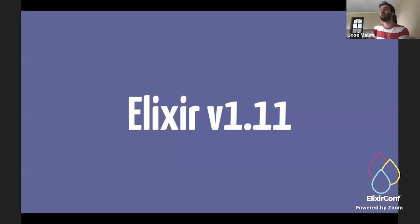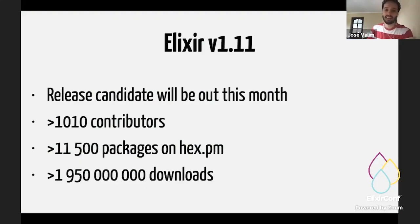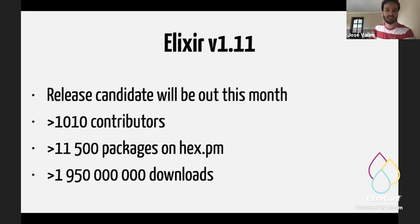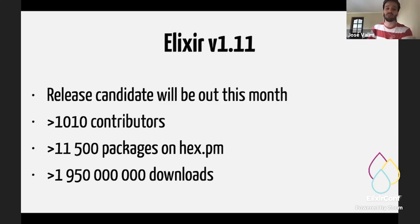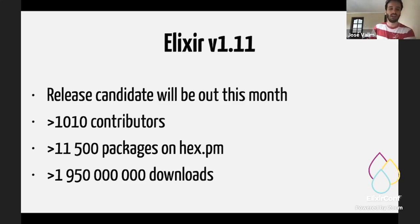The next Elixir version is going to be Elixir 1.11, and we are hoping the release candidate is going to be out this month. We'll have the release at the end of this month or beginning of October as planned. We have crossed more than 1,000 contributors to the language. The whole ecosystem is nearing 12,000 packages on Hex and we are almost crossing 2 billion downloads, which is quite impressive because when we started the year, we had just crossed 1 billion.